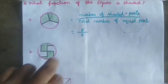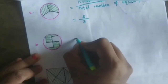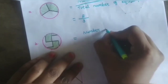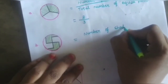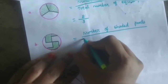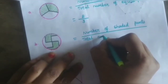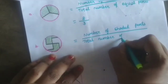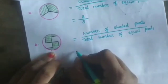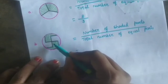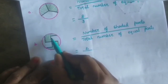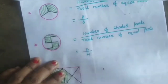The fraction for figure A is 2 by 3. The second one, figure B — here also, number of shaded parts divided by total number of equal parts. The number of shaded parts is 2, and the total number of equal parts is 4. That means 2 by 4.